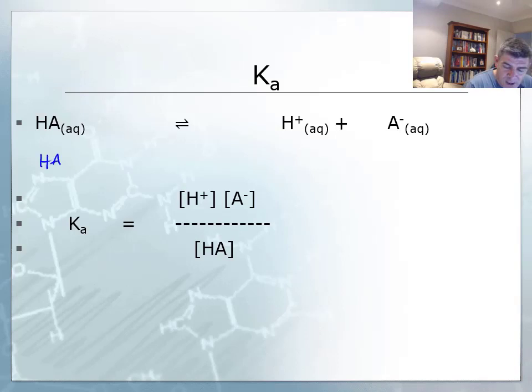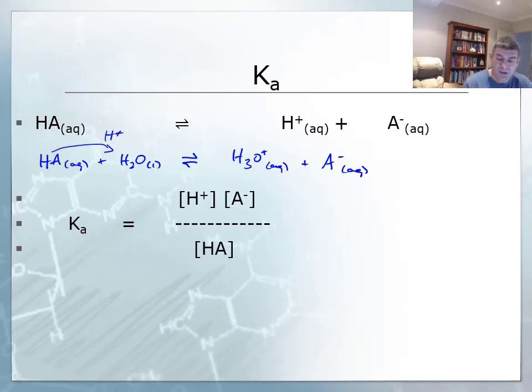If you want to write this in perhaps a little bit more precise detail, then we should actually include water in our equation, and therefore the H3O+ which is aqueous, and the anion, which is left in the solution as well. So this is the ionization that occurs when the proton from the acid is donated to the water molecules in order to form the hydronium ion and the anion.